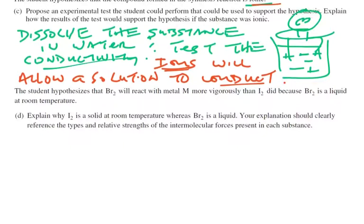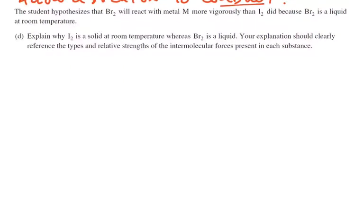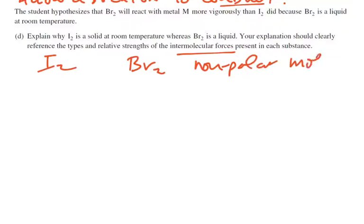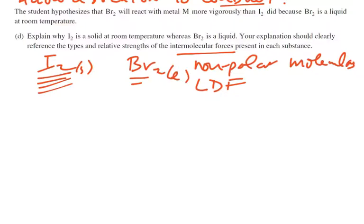Now it says here the student hypothesizes that bromine will react with the metal more vigorously than iodine because the bromine is a liquid. So the question is, why is bromine a liquid and iodine is a solid? We're talking about intermolecular forces present. Iodine, bromine - these are both diatomic molecules, and if they're diatomic, then they must be non-polar. That's important. Two non-polar molecules. If we have two non-polar molecules, then the only intermolecular force that's going to hold them together are London dispersion forces.